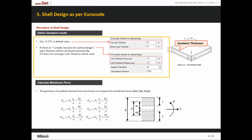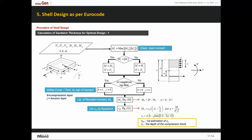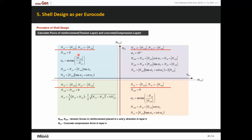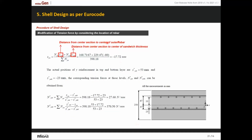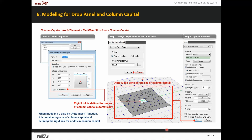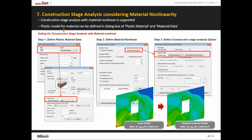Coming back to the presentation — that was about shell design. Now the drop panel and column capital can be assigned at the column and flat slab connection. This slide shows how to model a slab using the auto mesh function.